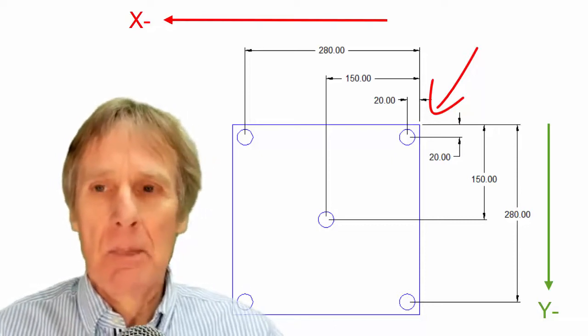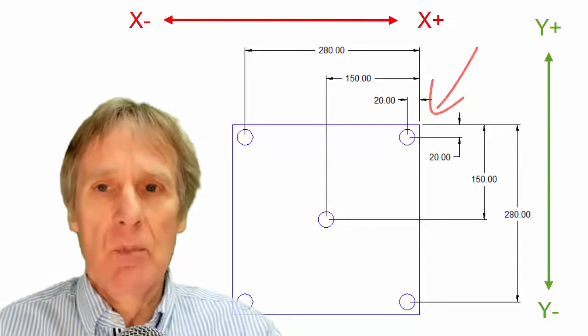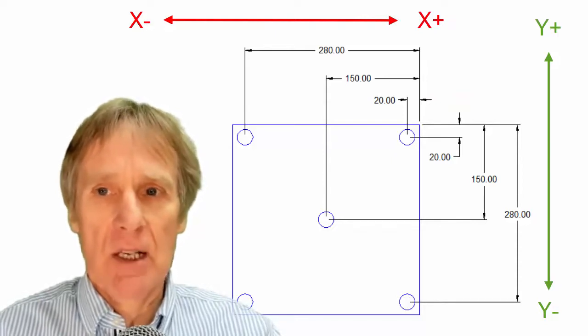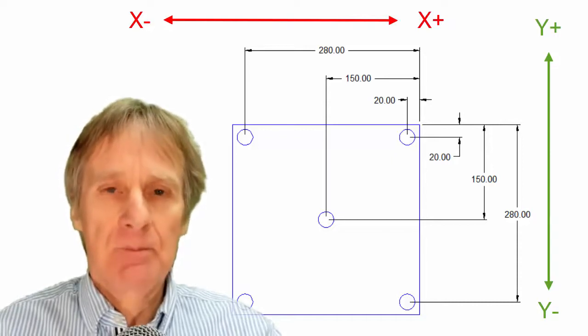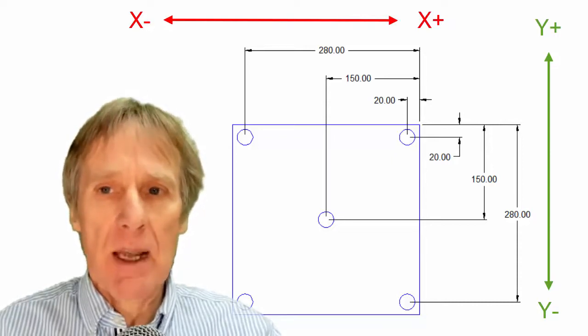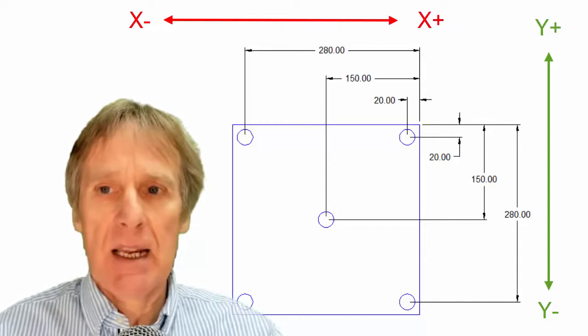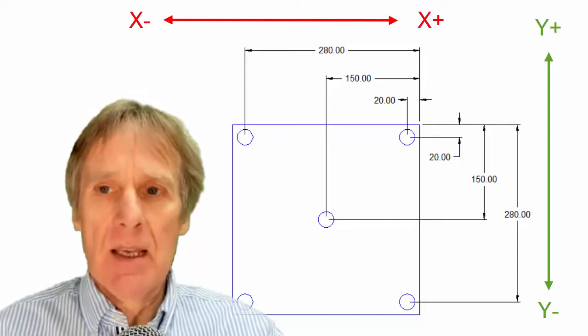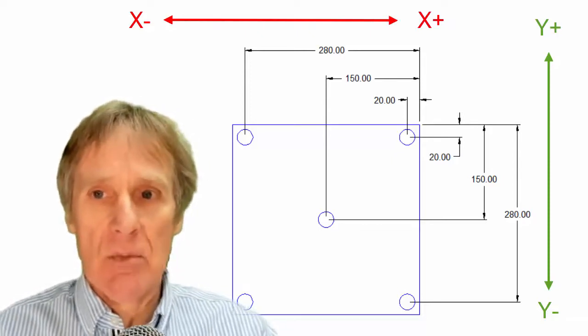But generally speaking, you want to be reading these numbers straight off the drawing. So whatever the figure on the drawing, if you can type that straight into your program, then everything will make sense when you look at that program—the numbers will be the same. So the less calculation, the less simple arithmetic you need to do taking these numbers away from one another, then the less likely you are to make mistakes with your program.